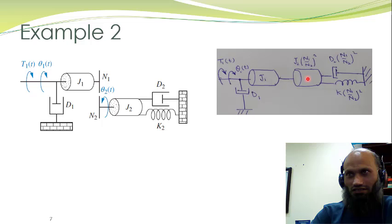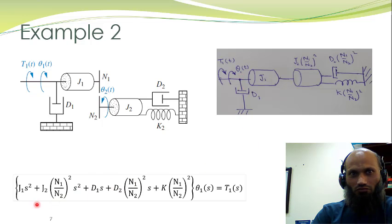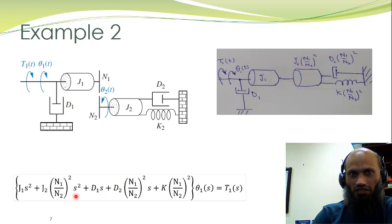This element is rigid, so it also has angular displacement theta1; this element is also rigid and has angular displacement theta1. There is only one linearly independent angular displacement in this system, and all impedances are connected with this angular displacement. The mathematical model is: sum of impedances connected with this displacement multiplied by the Laplace transform of this displacement equals the sum of externally applied torques. The impedances are J1·s², J2·(N1/N2)²·s², the damper impedance, and the spring impedance, summed and multiplied by theta1(s), equal to the externally applied torque.